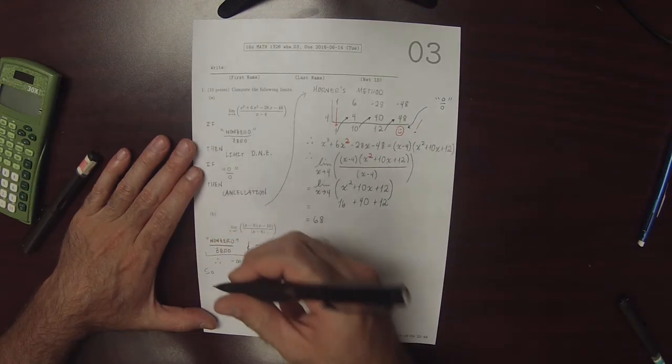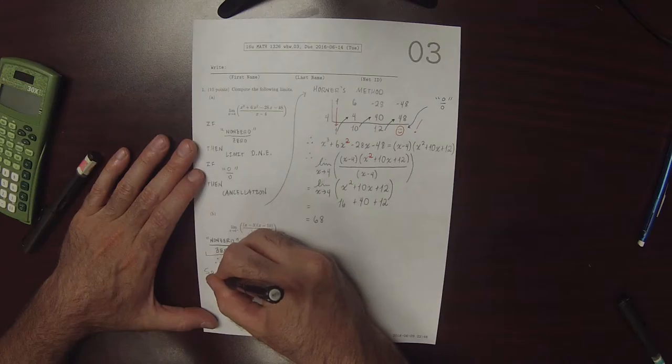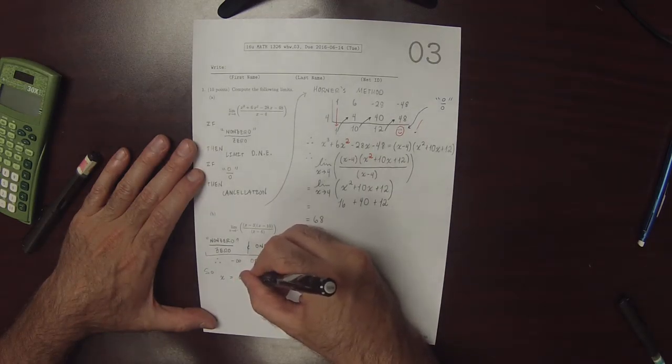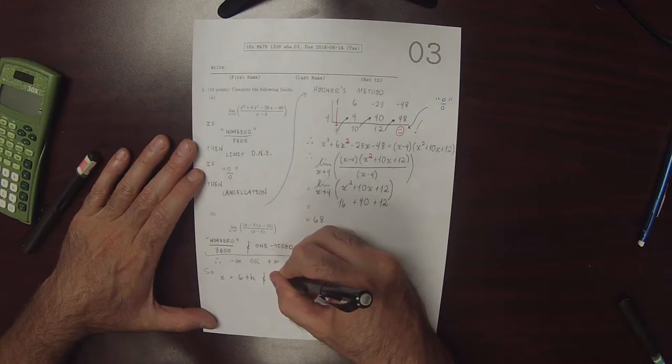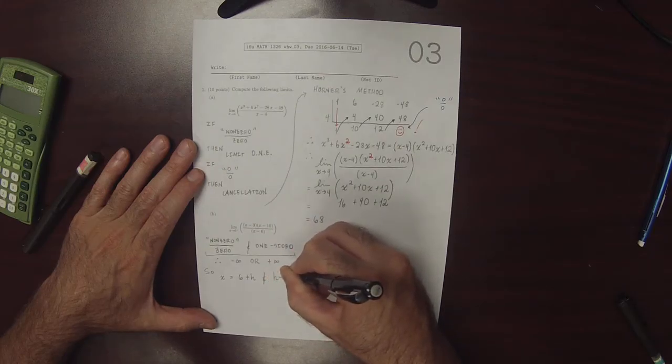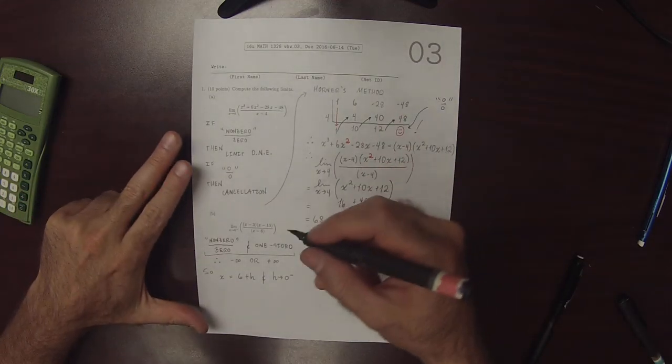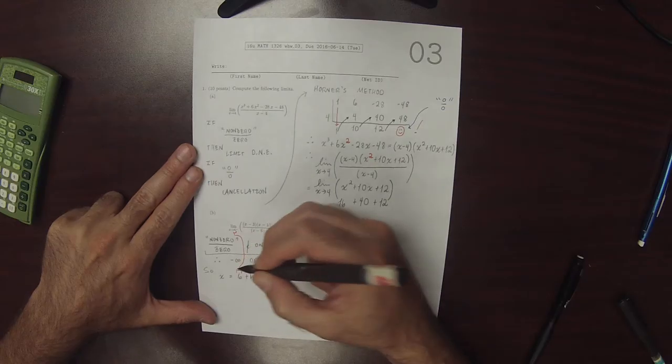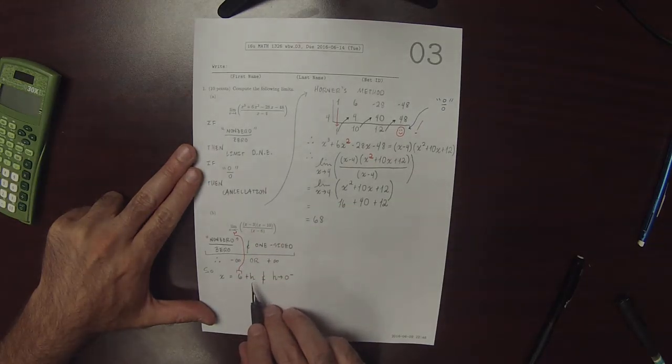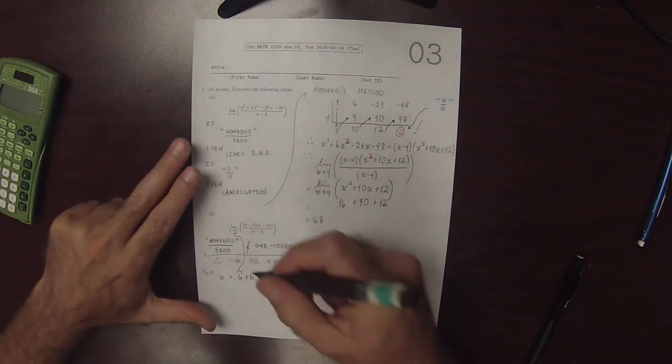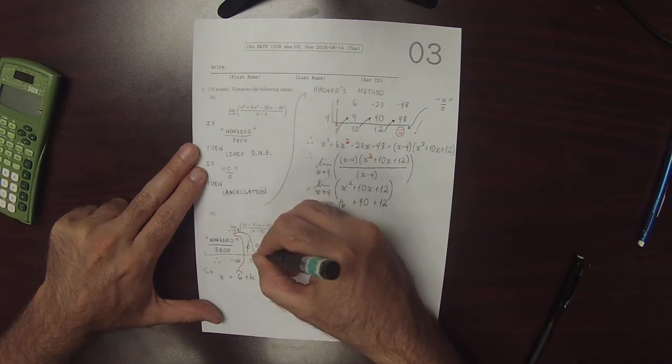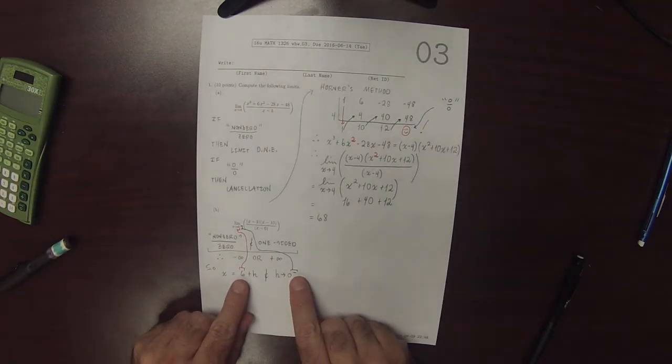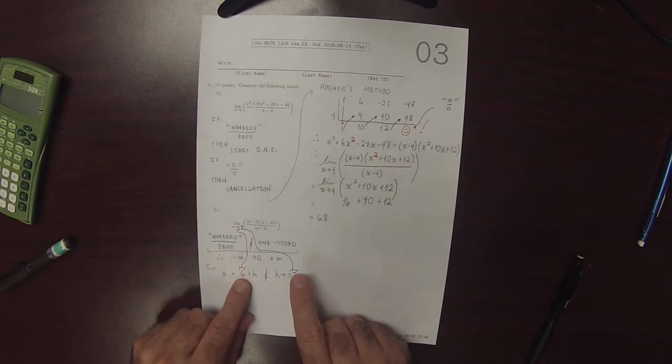So we're going to do the change of variables. We're going to say that x is the limit point, 6, plus h. And we're going to say that h is going to 0 from the left. So this change of variables is always the same. The limit point always goes here. And then it's always plus h, with h going to 0. And the sidedness of h is the same as this. So these two are the only things that change. But we're splitting out where we're going and how we're getting there.